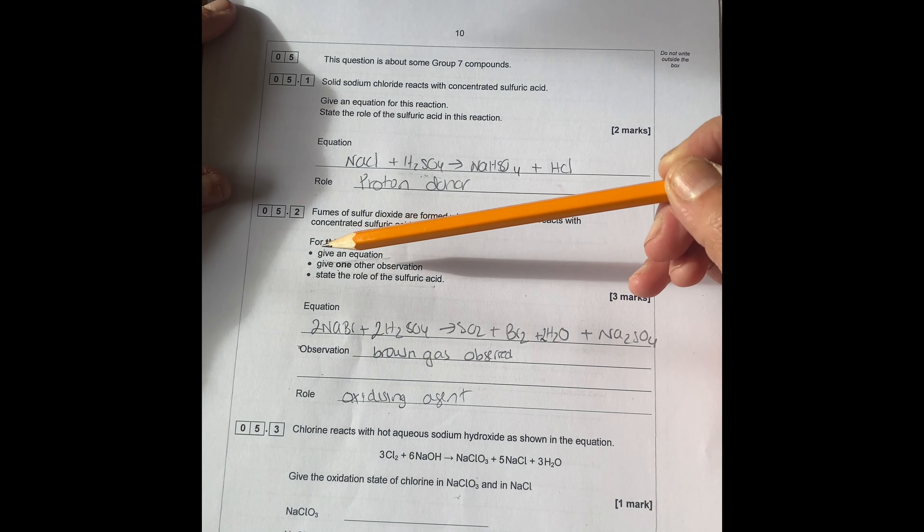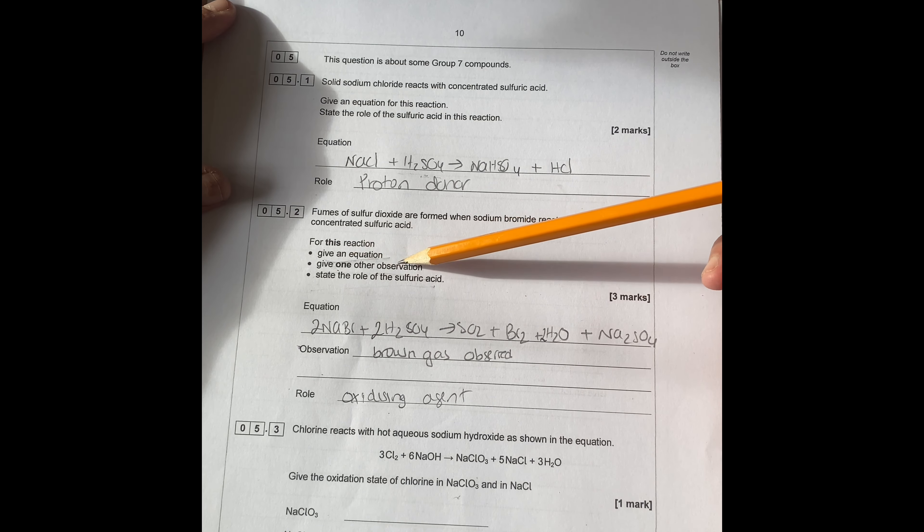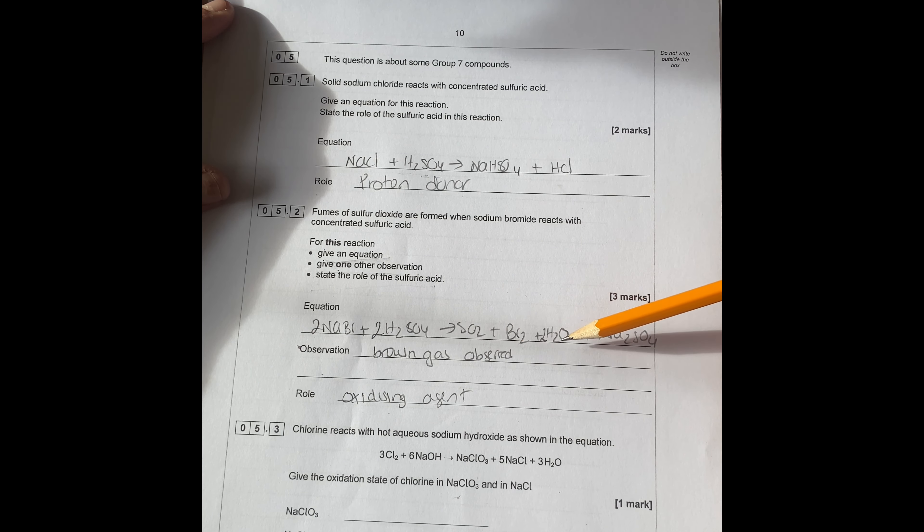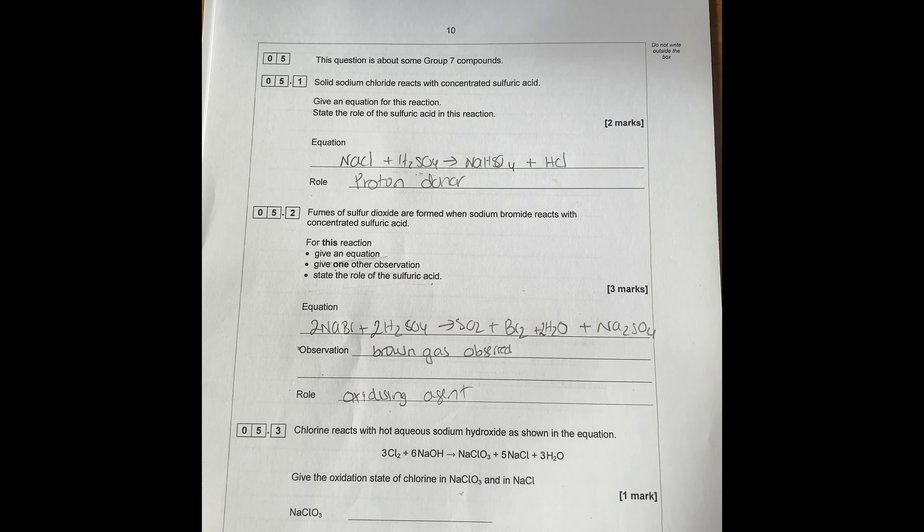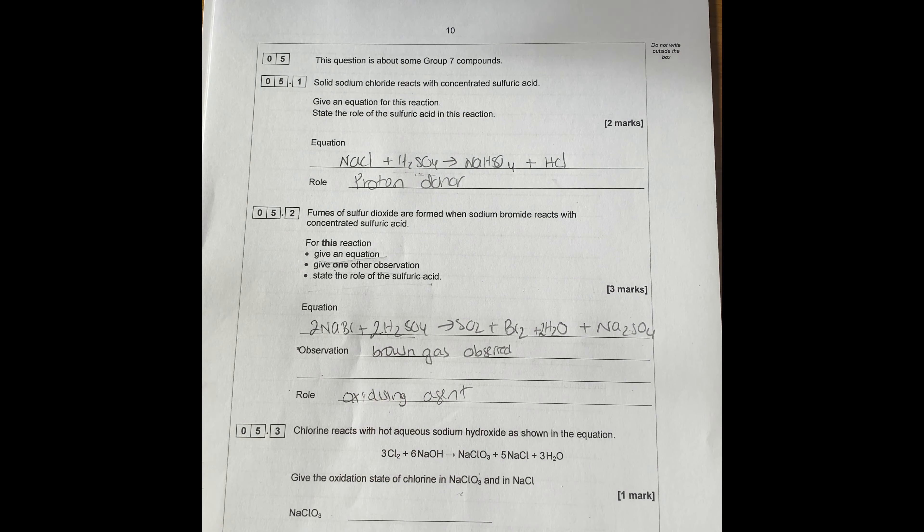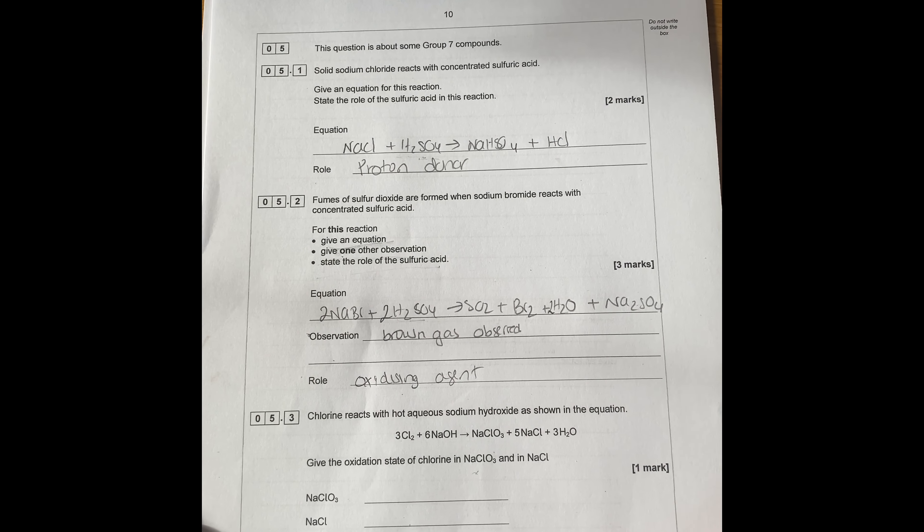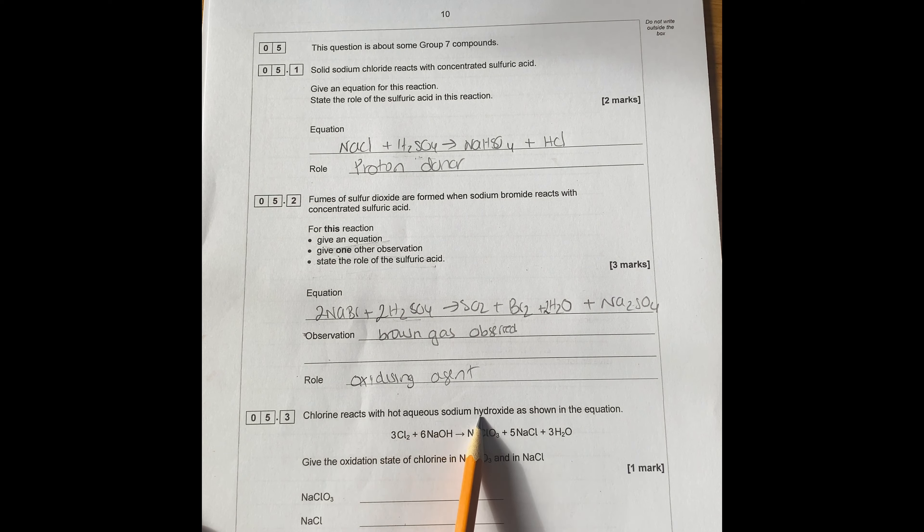To recap, this is that fumes of sulfur dioxide are formed when sodium bromide reacts with concentrated sulfuric acid. So you have got sodium bromide plus sulfuric acid gives SO2 gas, Br2, water and sodium sulfate. And then the observation is brown gas observed. And the role of your sulfuric acid is oxidizing agent.